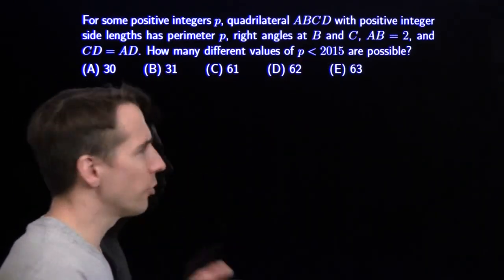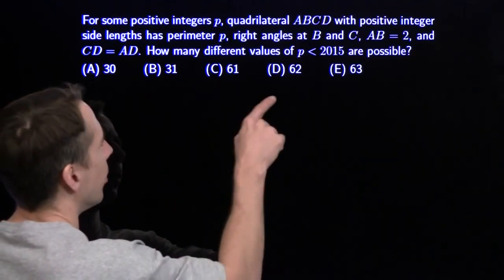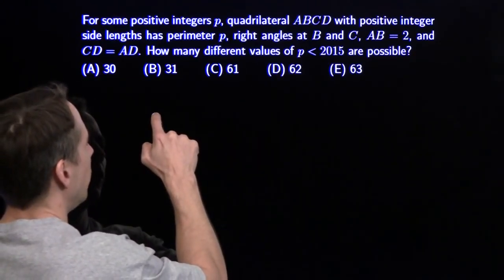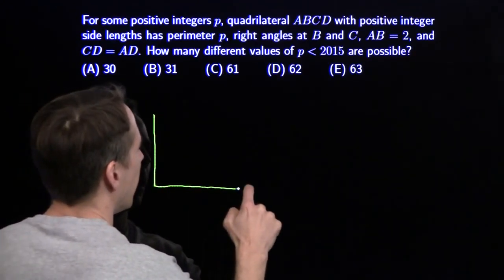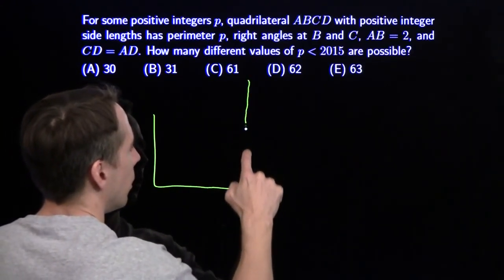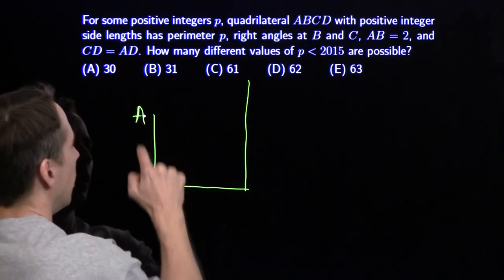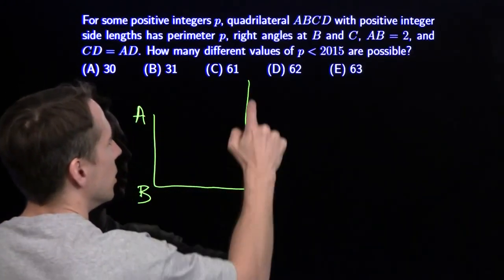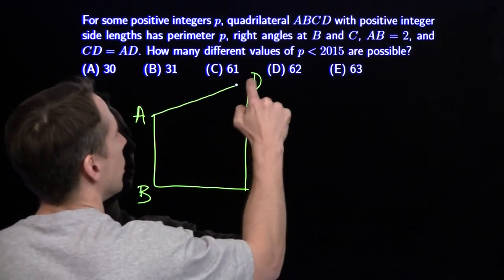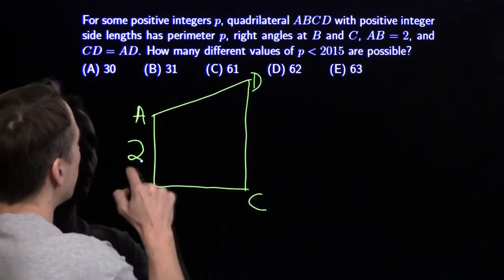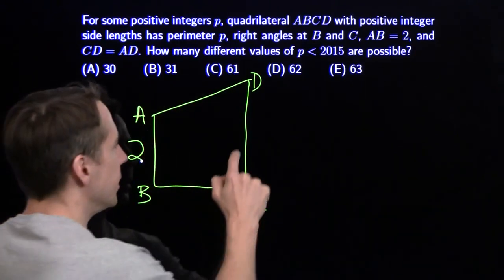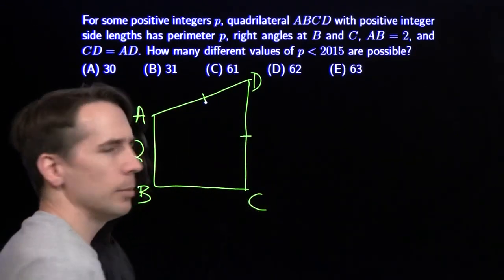I'm going to draw the quadrilateral. I'm not going to worry about P right now, but draw a quadrilateral with right angles at B and C. Put those down at the bottom. A, B, C, D. And AB is 2, and CD and AD have the same length.